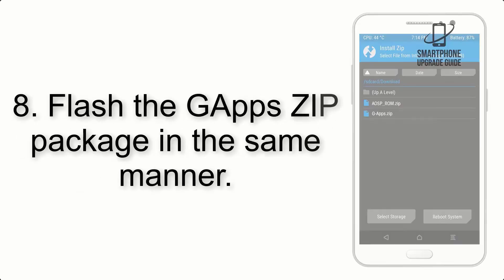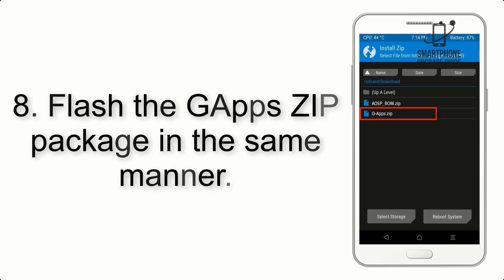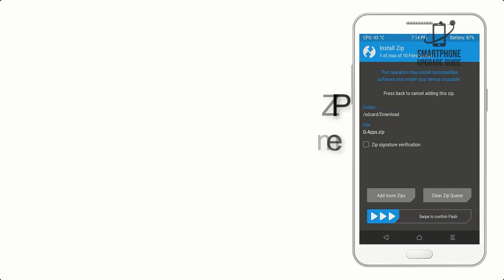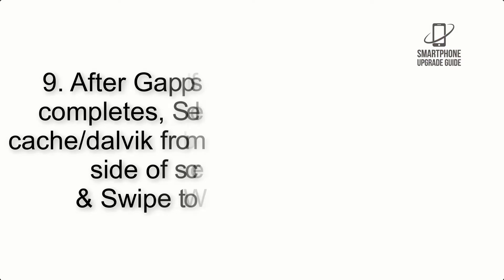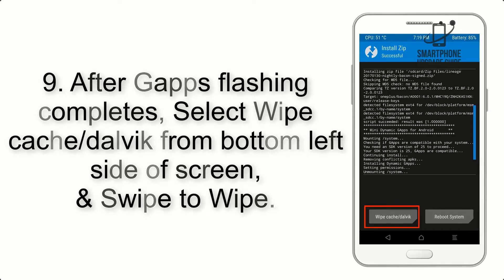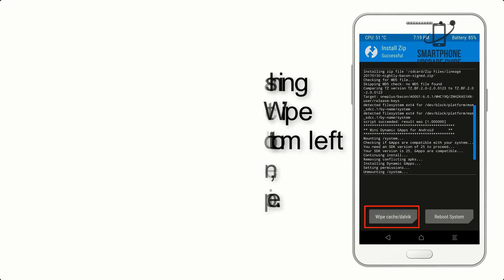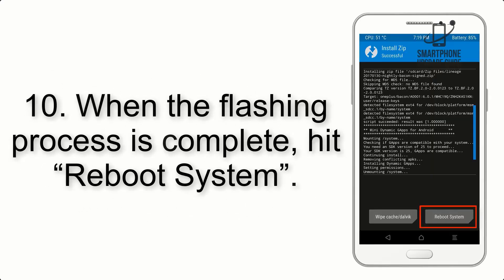Step 8: Flash the GApps zip package in the same manner. Step 9: After GApps flashing completes, select Wipe Cache and Dalvik from the bottom left side of the screen and swipe to wipe. Step 10: When the flashing process is complete,